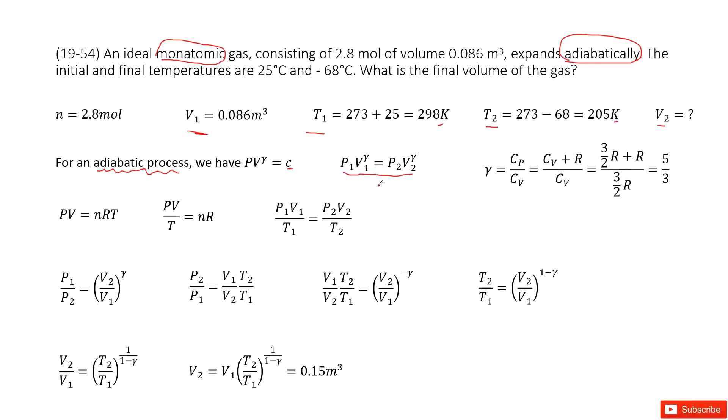Now next question: What is gamma? It is a parameter, a number. Cp over Cv. Cp is called molecular specific heat at constant pressure, and Cv is molecular specific heat at constant volume. And Cp equals Cv plus R. Now next question: What is Cv? It tells us it is a monoatomic gas. You can check your textbook. Monoatomic gas Cv is 3R over 2. Therefore, you can find gamma as 5 over 3.